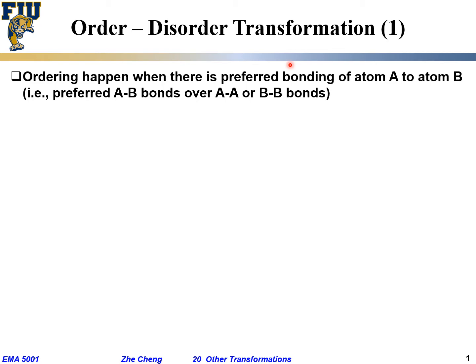This so-called ordering happens when there is preferred bonding between one atom A and another atom B. The best example of ordering would be sodium chloride. In sodium chloride, every chlorine wants to be bound with sodium, and every sodium wants to be bound only with chlorine, not with other sodium. The extreme example of an ordered phase would be your typical ionic bonding material.